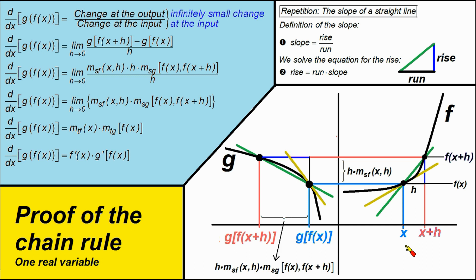Let's do an example. If I choose x on this axis, then I get f of x — the first function gives me f of x. f of x is the output, but it is the input of the second function g. And the second function gives g of f of x.